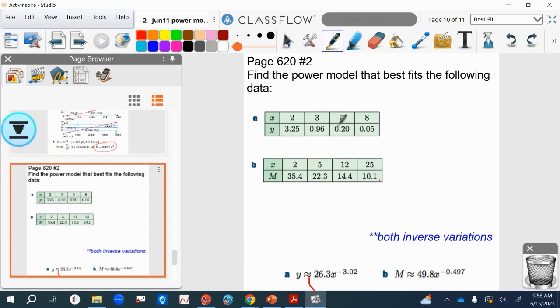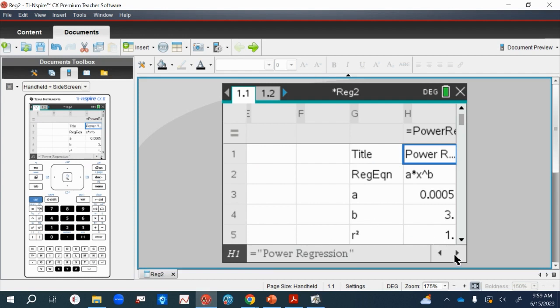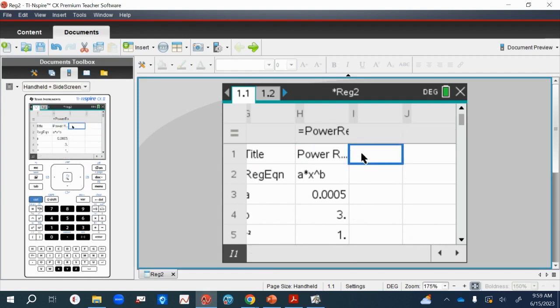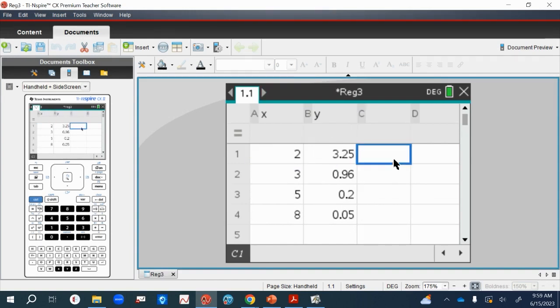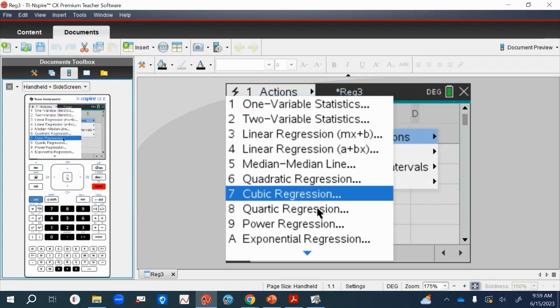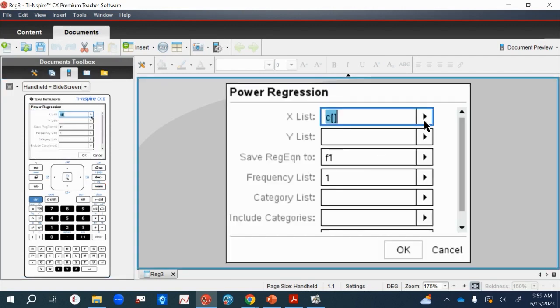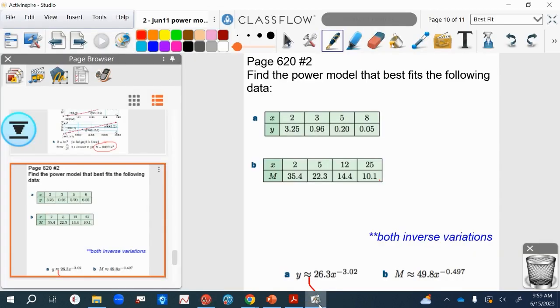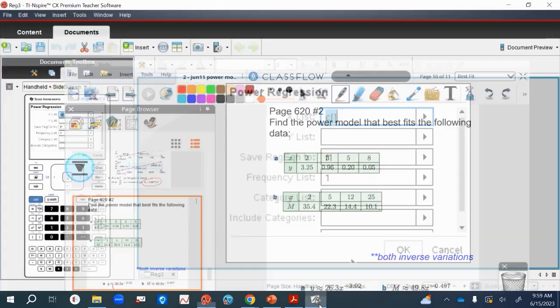Let's do one last one, which is set up here, because we haven't done an inverse one yet. So let's do that. So this is the last one. And again, statistics, stat calculations, power regression. Make sure you know which one's x and which one's y.